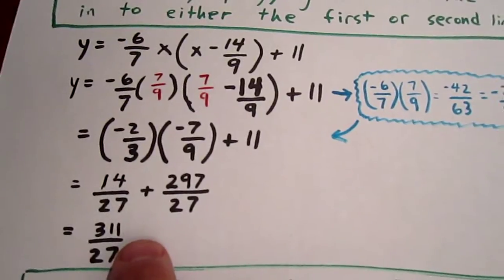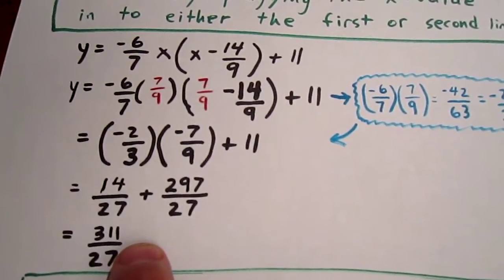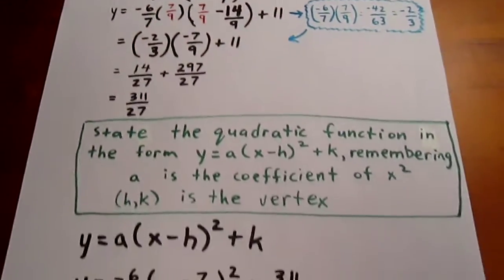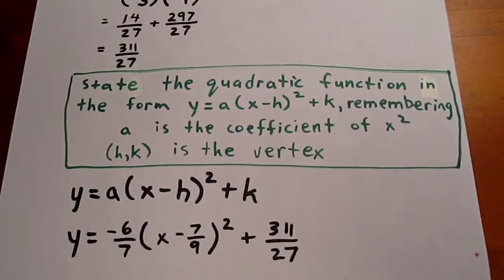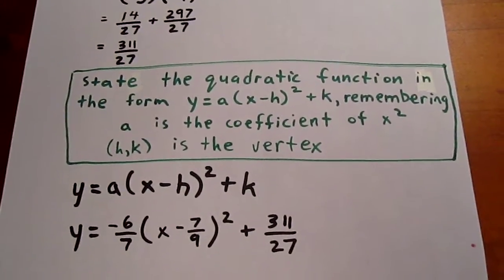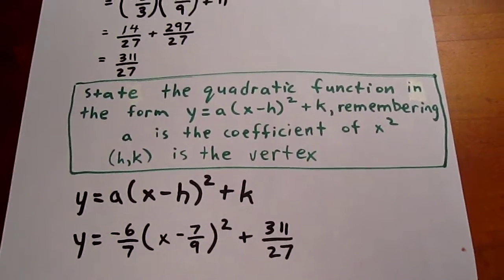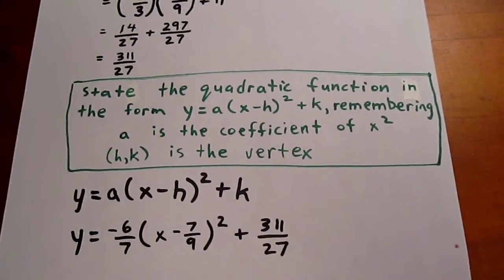This is the y value of our vertex. Well, we know the a value of our parabola is negative 6 over 7. So we can state our quadratic in vertex form as y equals negative 6 over 7 times x minus 7 over 9 quantity squared plus 311 over 27.